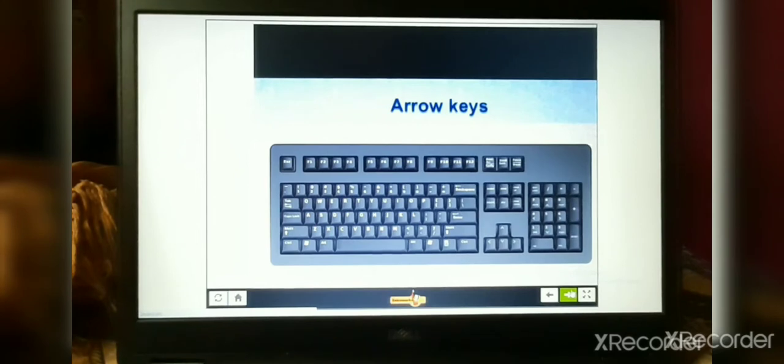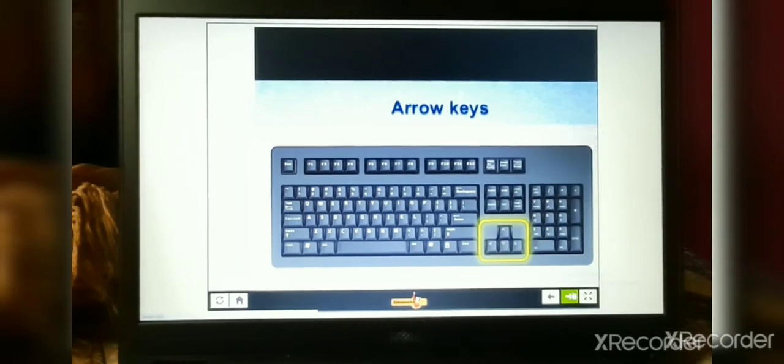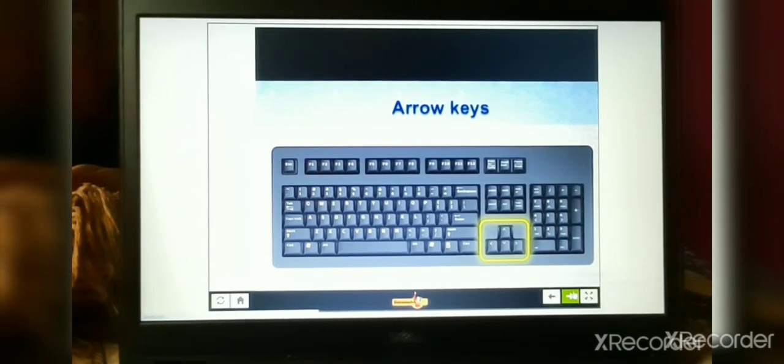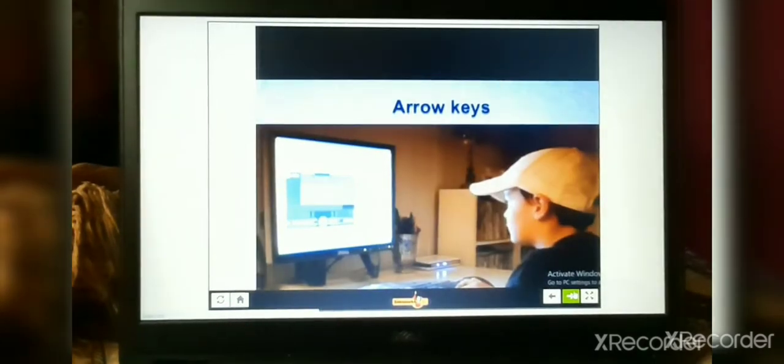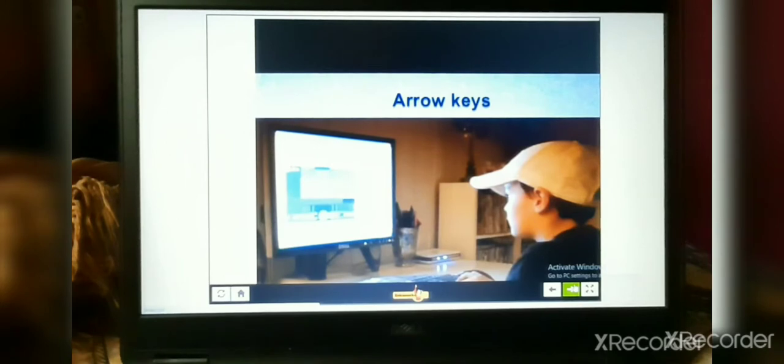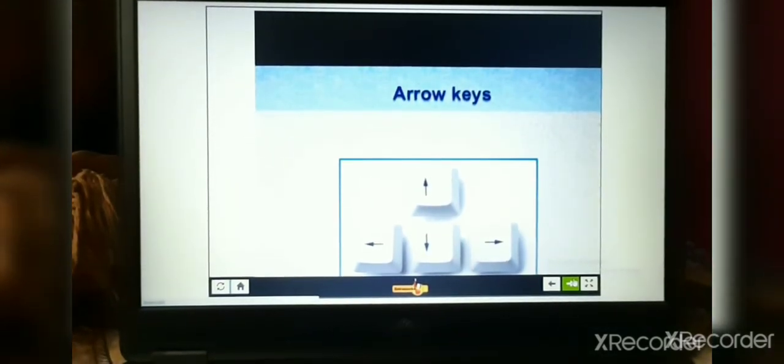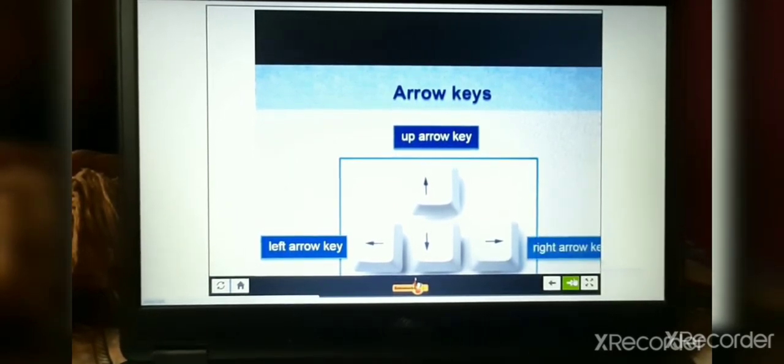These keys are used for moving the cursor on the computer screen. These keys are located at the right-hand side of the keyboard. Arrow keys are used for many purposes, such as controlling a game, moving cursor and scrolling a file. There are four arrow keys: up arrow key, down arrow key, left arrow key and right arrow key.